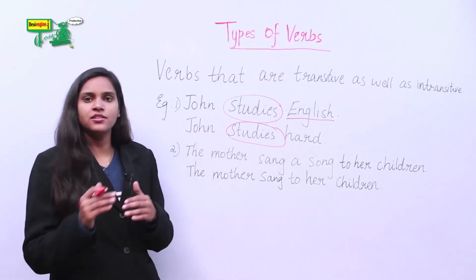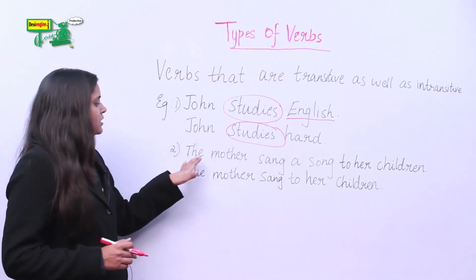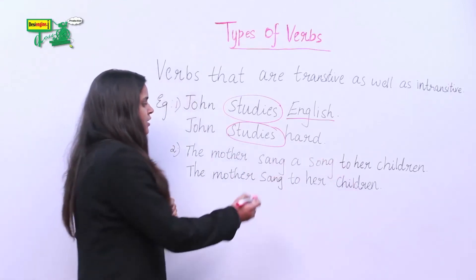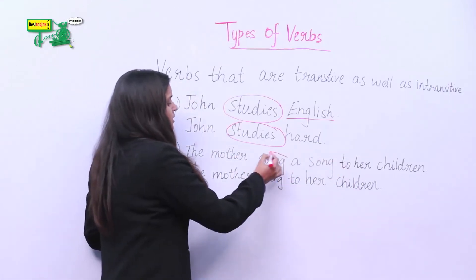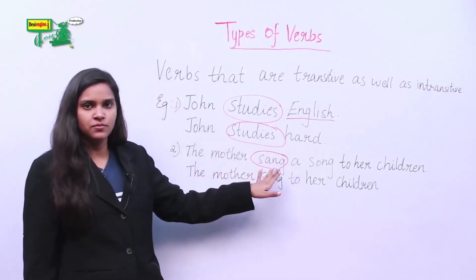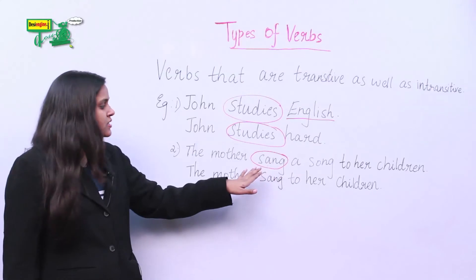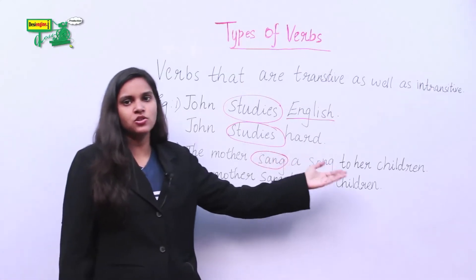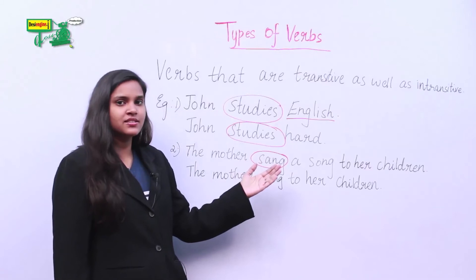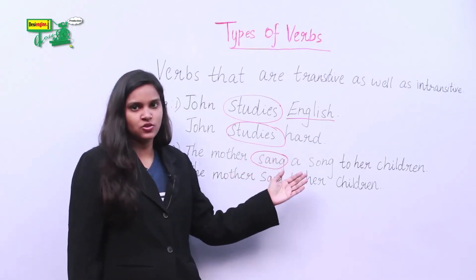Let's take another example: The mother sang a song to her children. Here 'sang' is a verb. It answers to the question 'what?' — sang what? — sang a song. So in this sentence the verb 'sang' takes up the direct object.